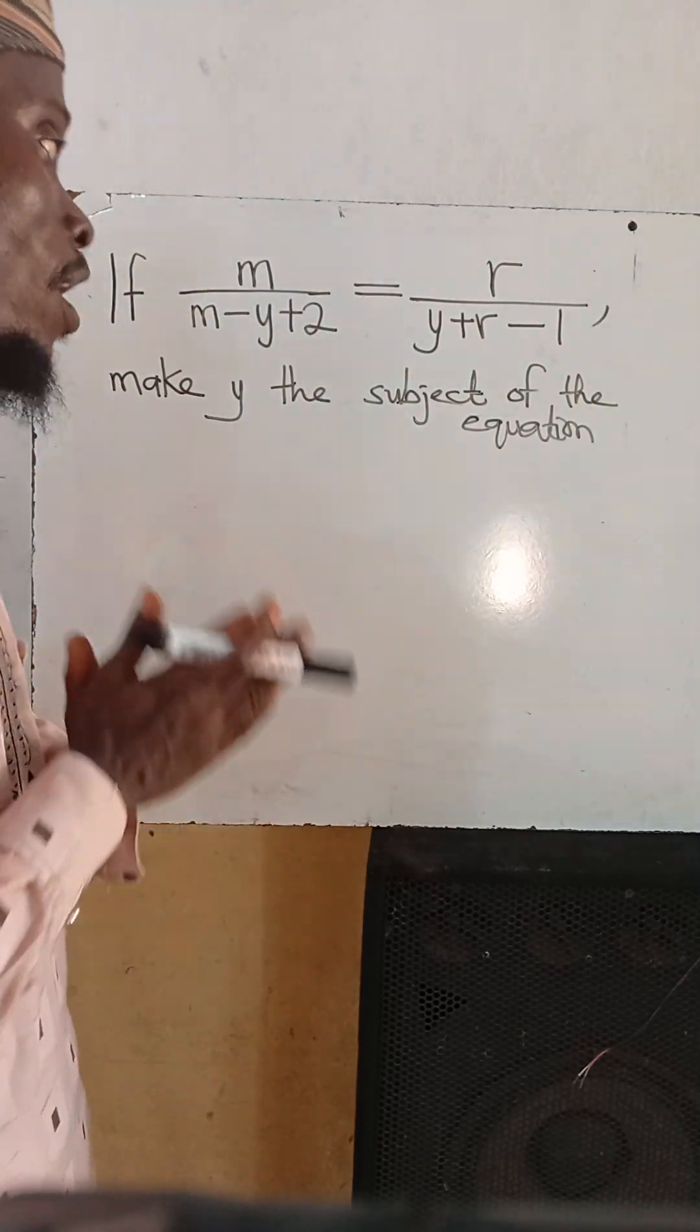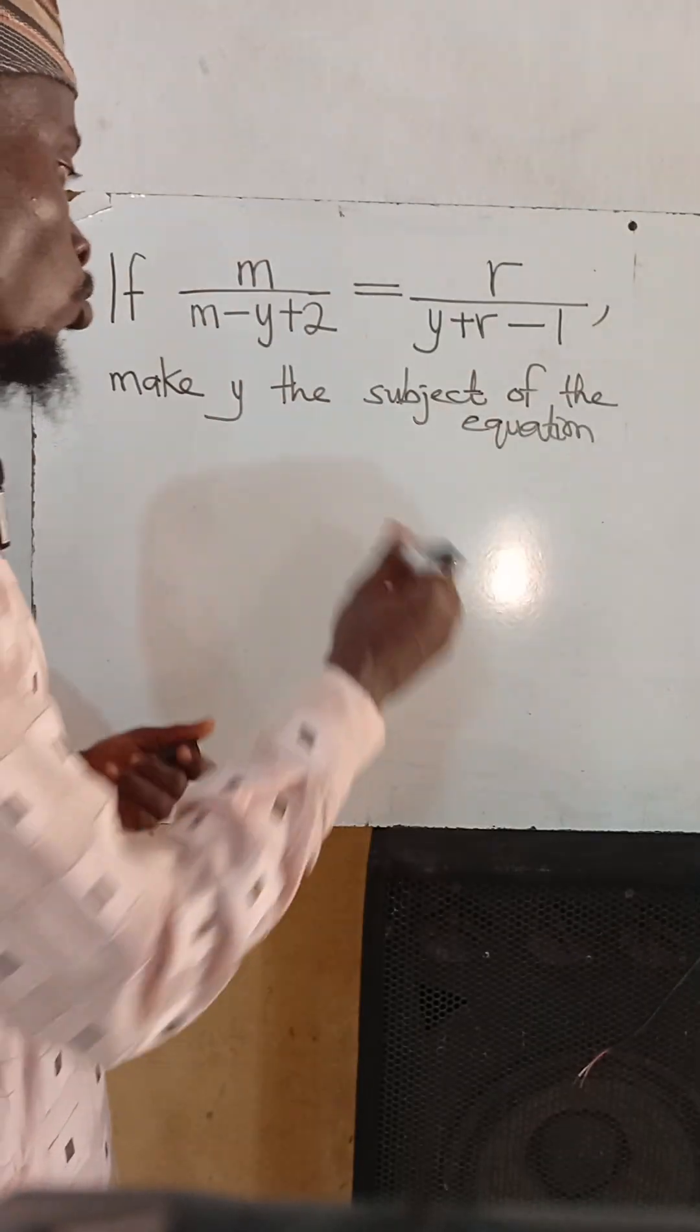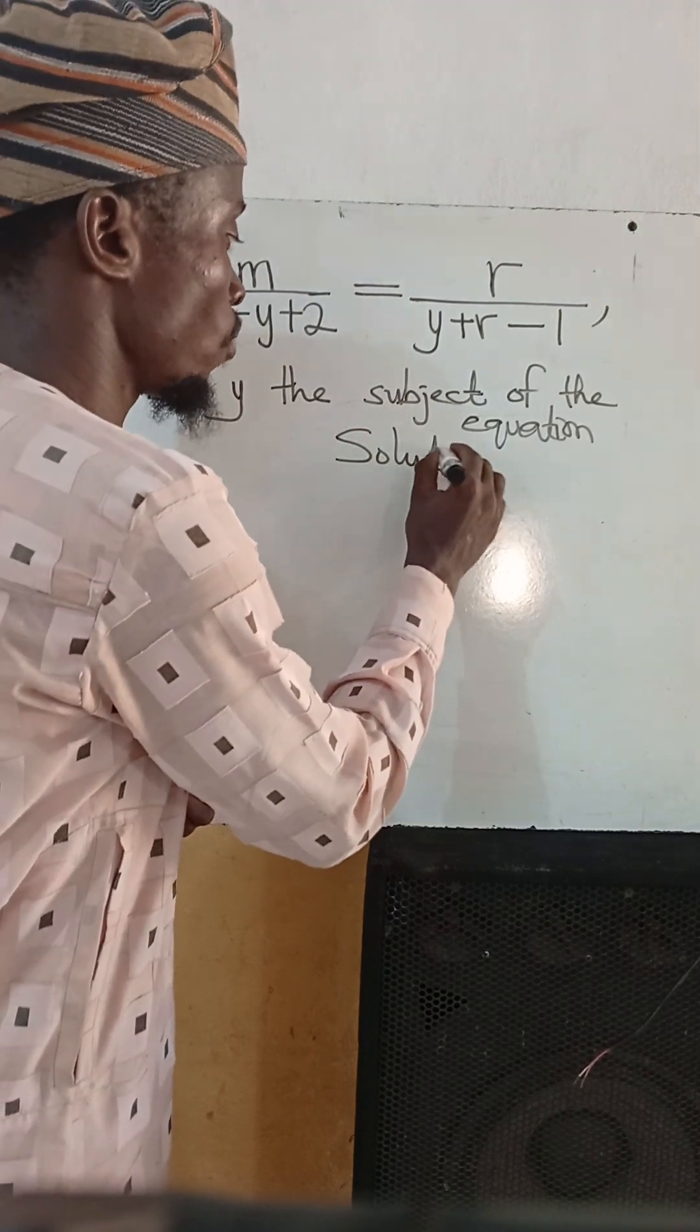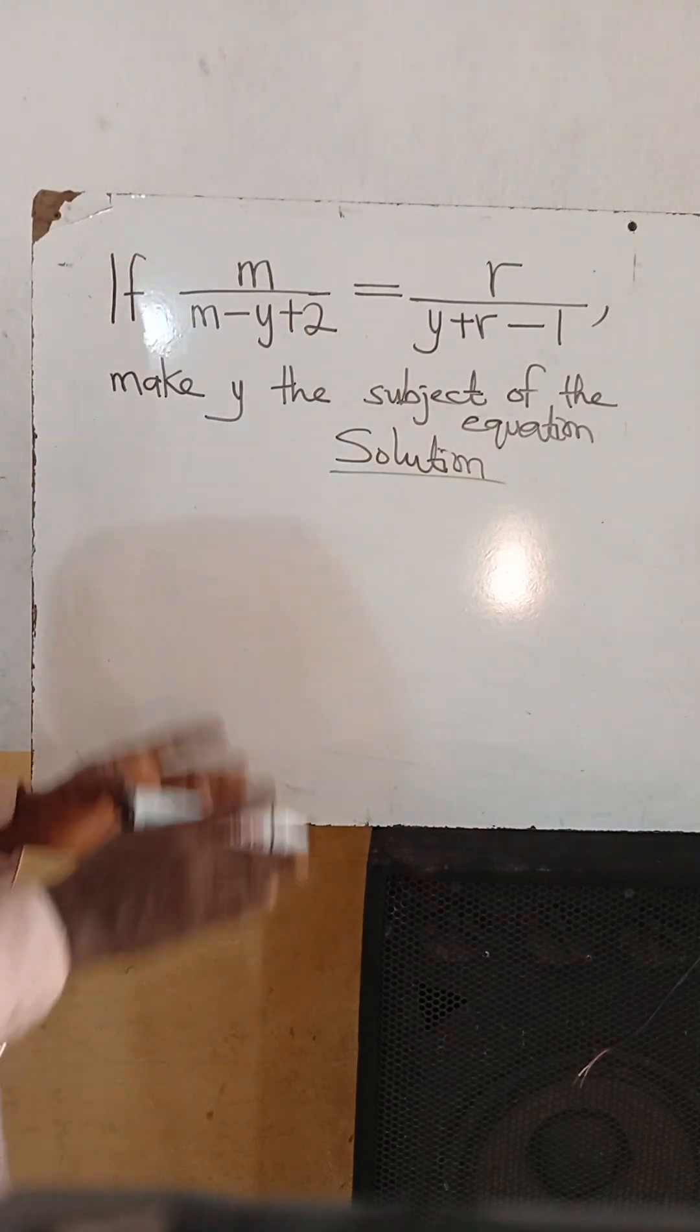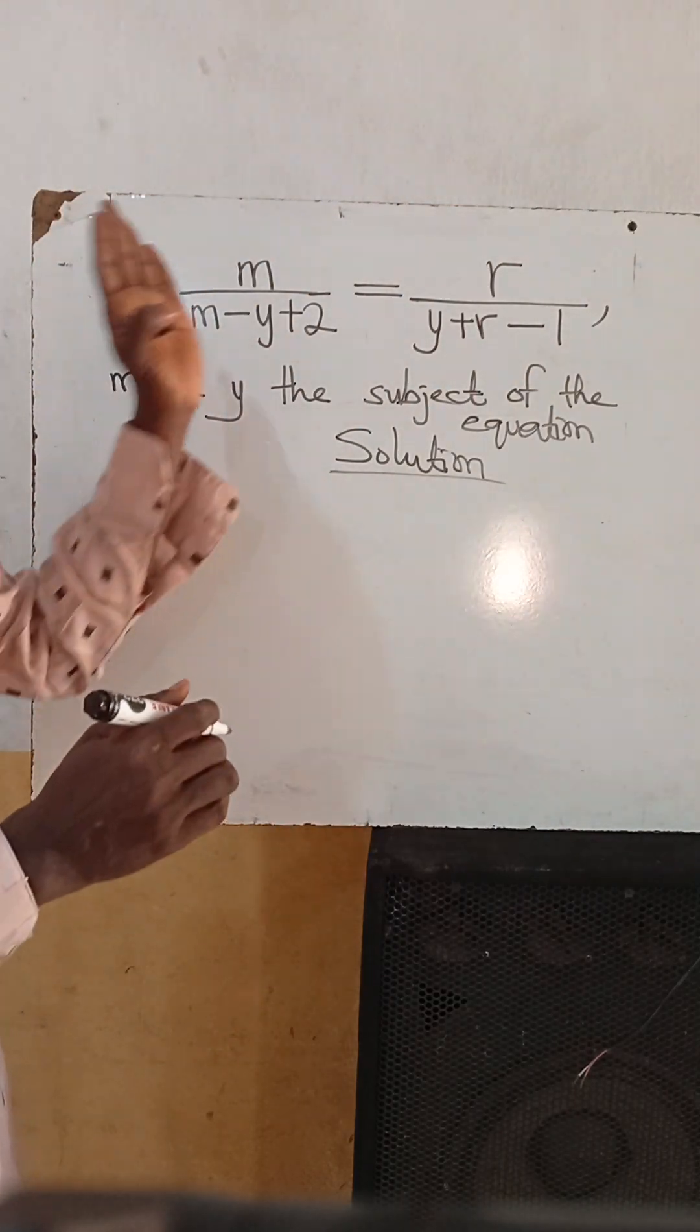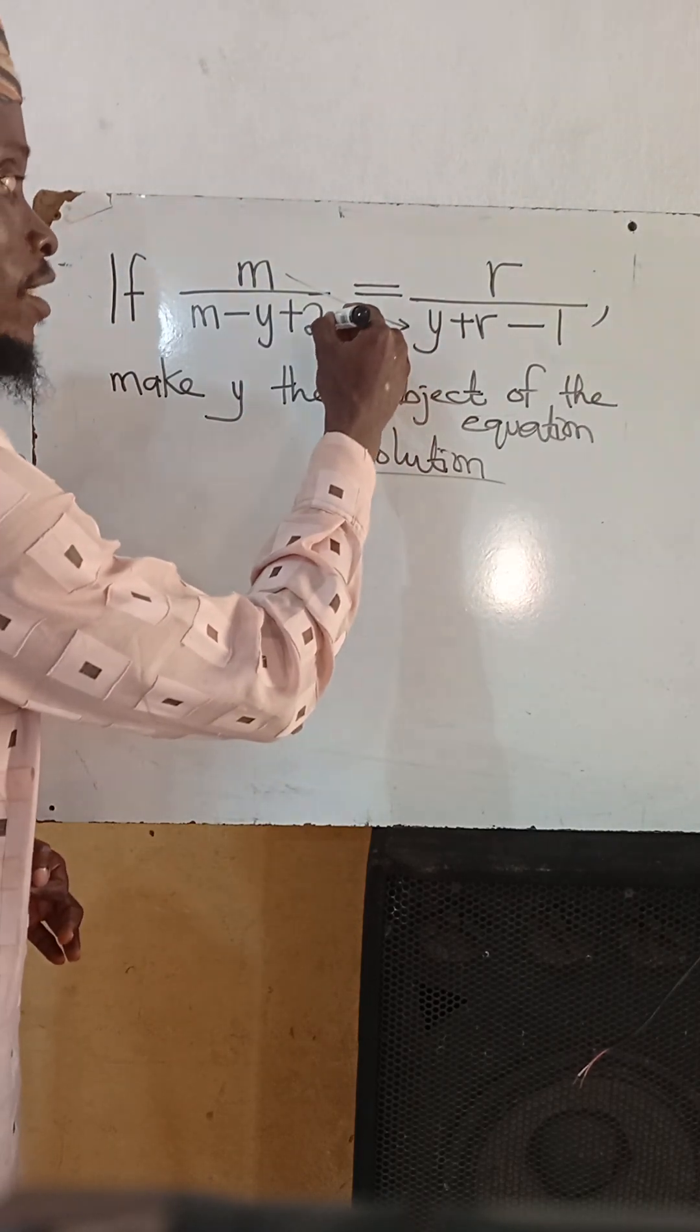We are being told to make y the subject of the equation, which means that we want to make y to stand alone. The first thing to do here is cross multiplication. Cross multiplication means that we multiply this numerator with our denominator here, and this denominator with our numerator here.